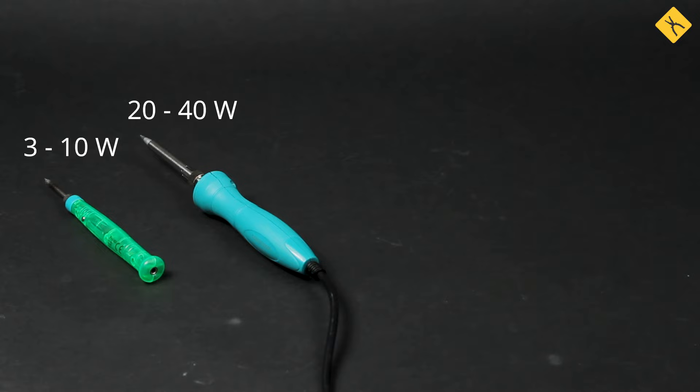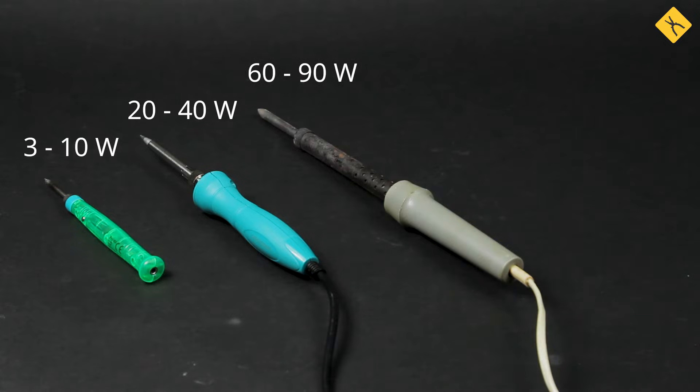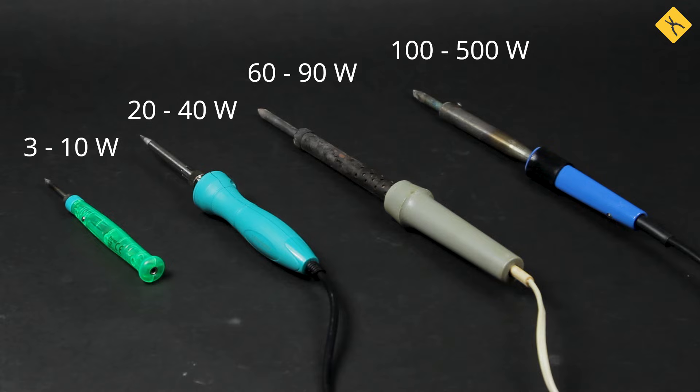as well as household purposes. 60-90W soldering irons are used for massive components, as well as soldering thick wires. They are often used in car service. 100-500W soldering irons are used for radiators and other massive components.